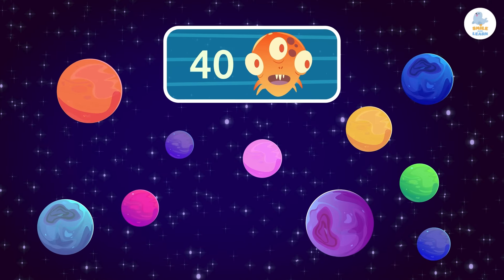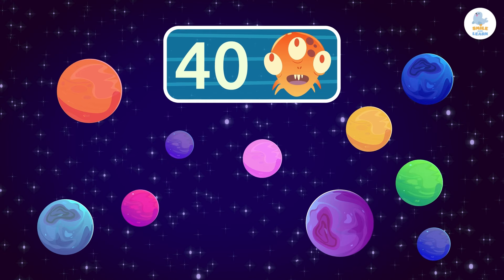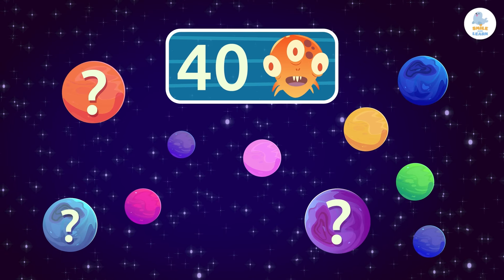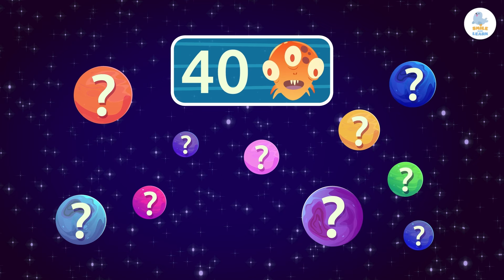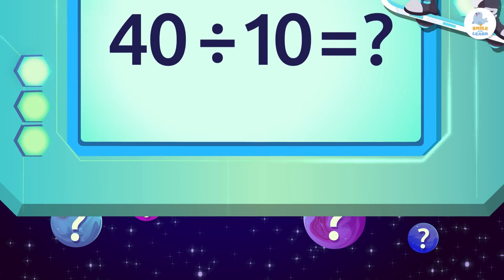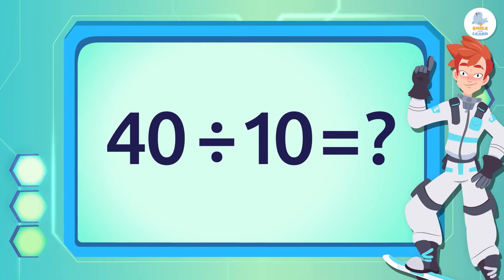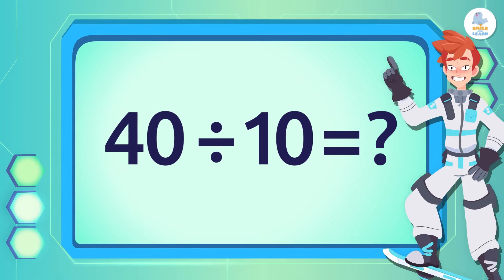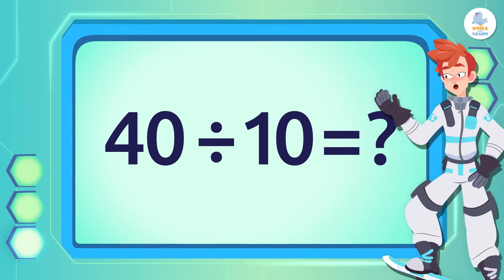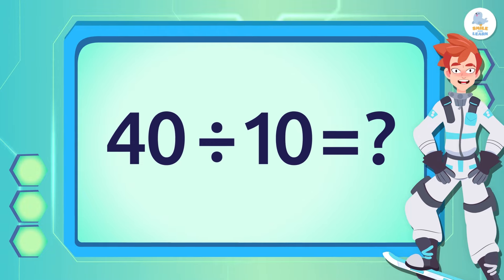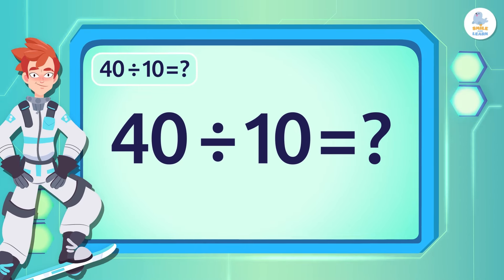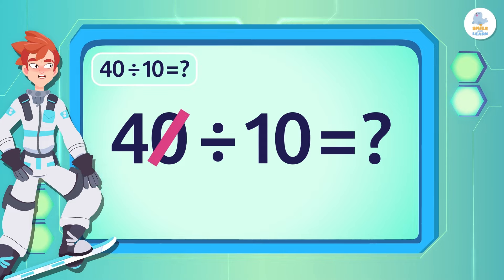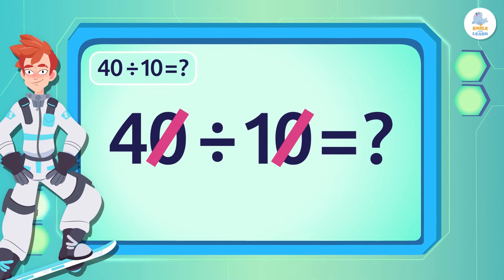There are 40 Martians in total on these 10 planets. If we divide them equally, how many Martians are there on each planet? To divide 40 by 10, we can use the traditional method, but I will show you a trick to calculate it faster. It's very easy!